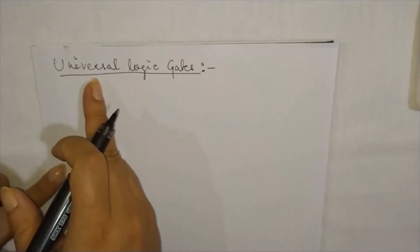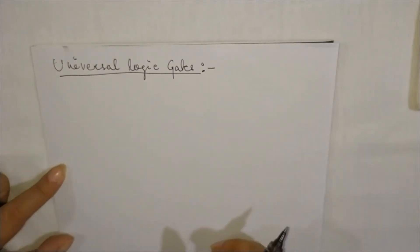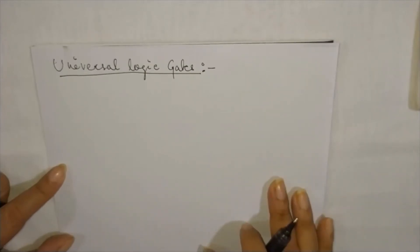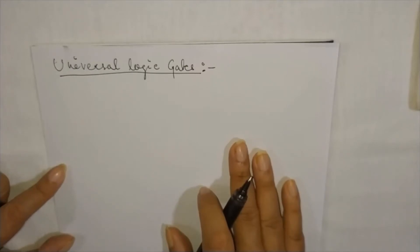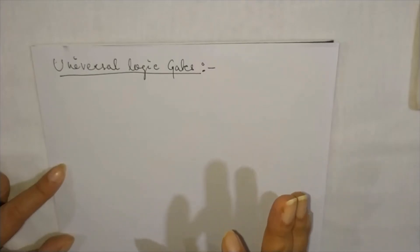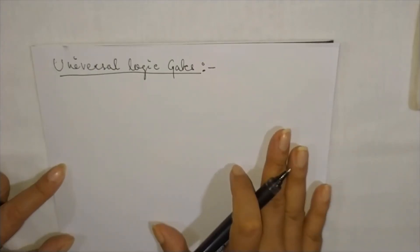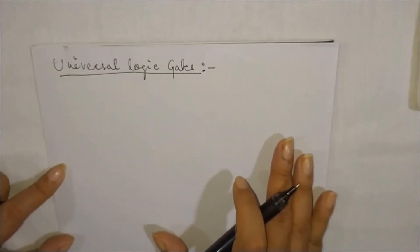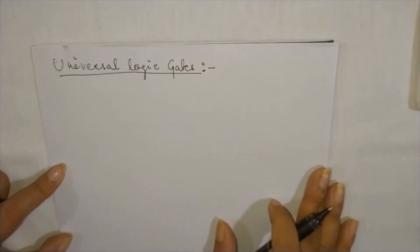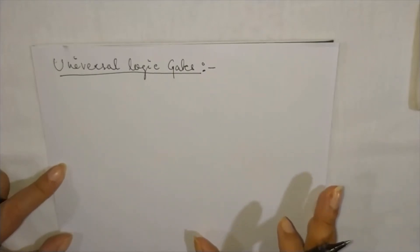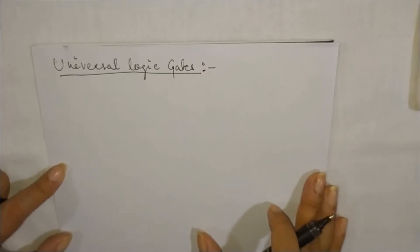Now I am talking about universal logic gates. Why is it called universal logic gates? What are universal logic gates? We will go into that. Already we have discussed that logic gates are governed by certain algebra, and that algebra is nothing but Boolean algebra. Every digital electronics is based on this algebra, and it has only two digits: 0 and 1. 0 means off condition or open circuit. 1 means on condition or closed circuit.